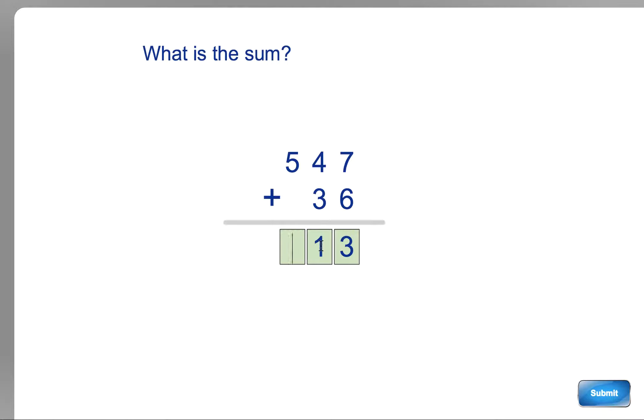Then you add the next column. So you've got 4 plus 3 is 7, plus this one here is 8. So remember to add on anything that you've carried across. The 8 goes in there.